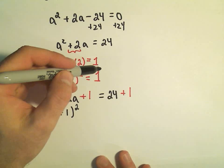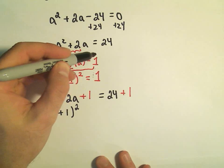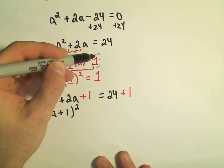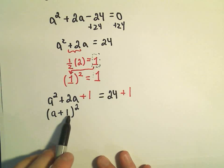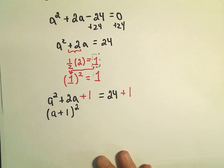Maybe one other little observation, too. This number that you, when you take one half of it, whatever that number is, positive 1, that's the number that you're going to use inside the parentheses when you write it as a perfect square. So just maybe one little thing to think about.